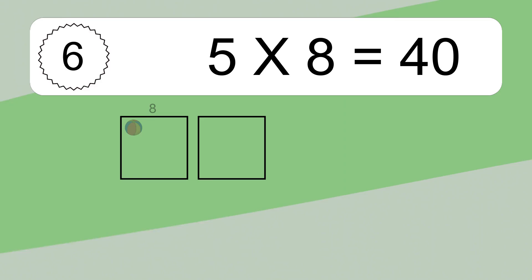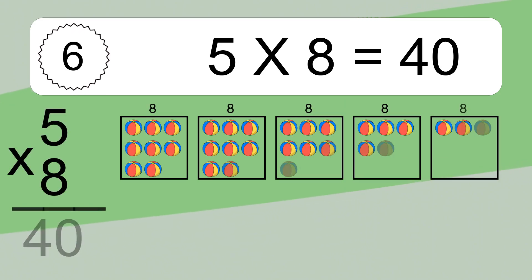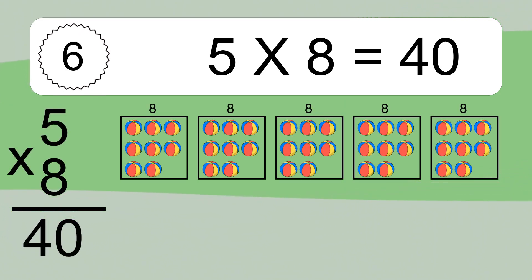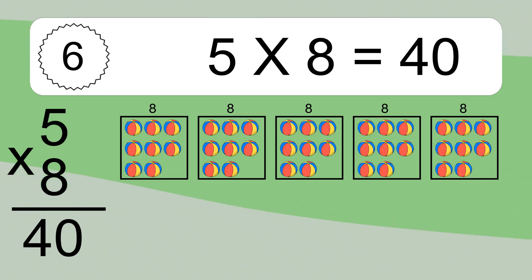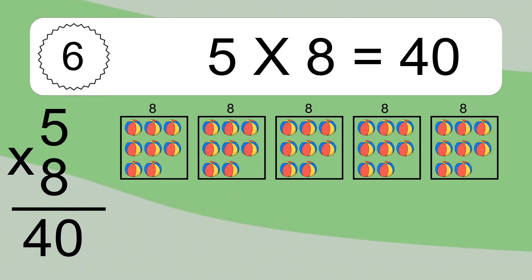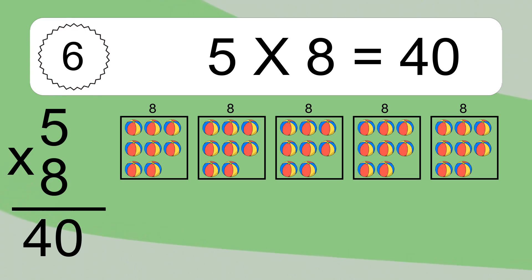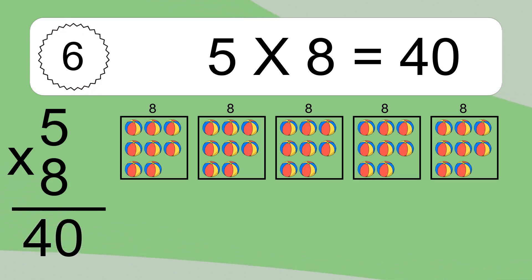5 times 8 equals what? 5 times 8 equals 40. We have 5 boxes and each box has 8 colorful balls inside. If you count all the balls in all the boxes together, you will have 5 times 8 balls. This equals 40 balls.